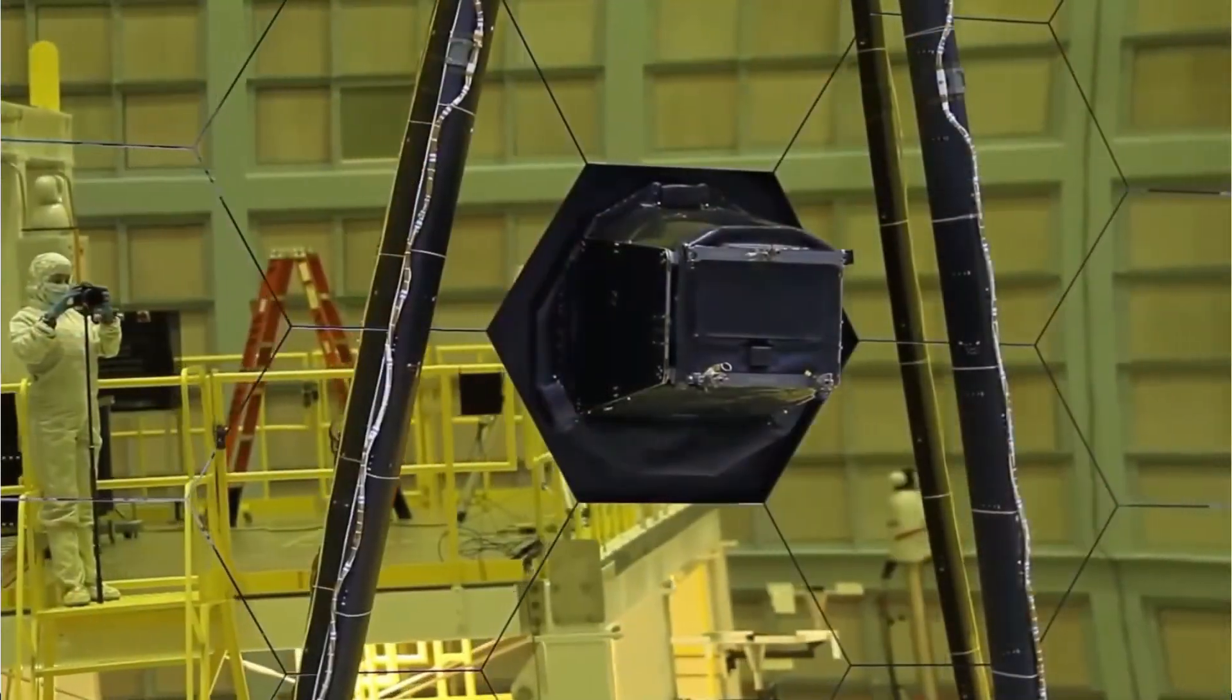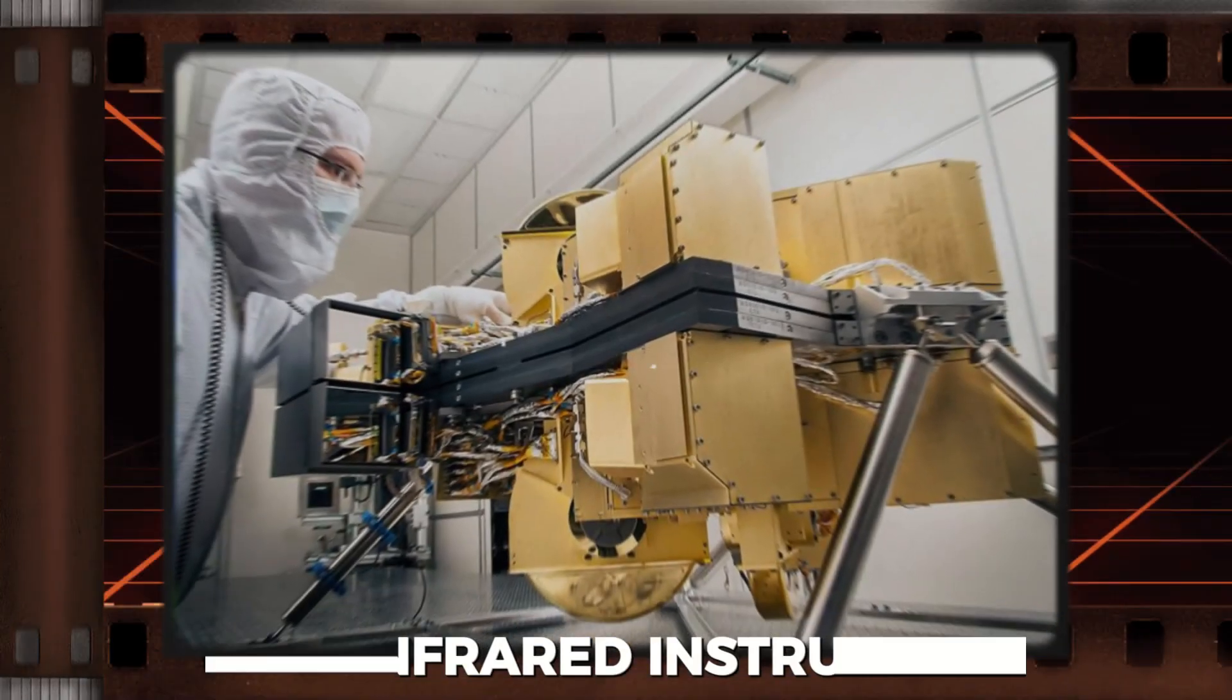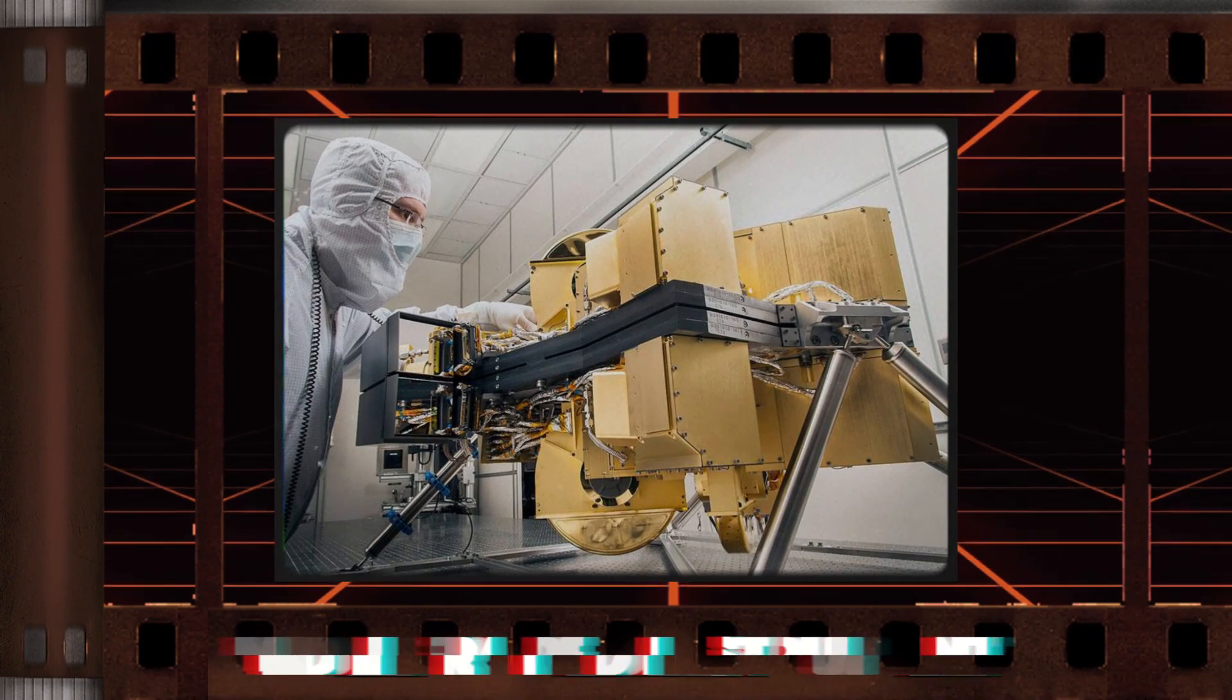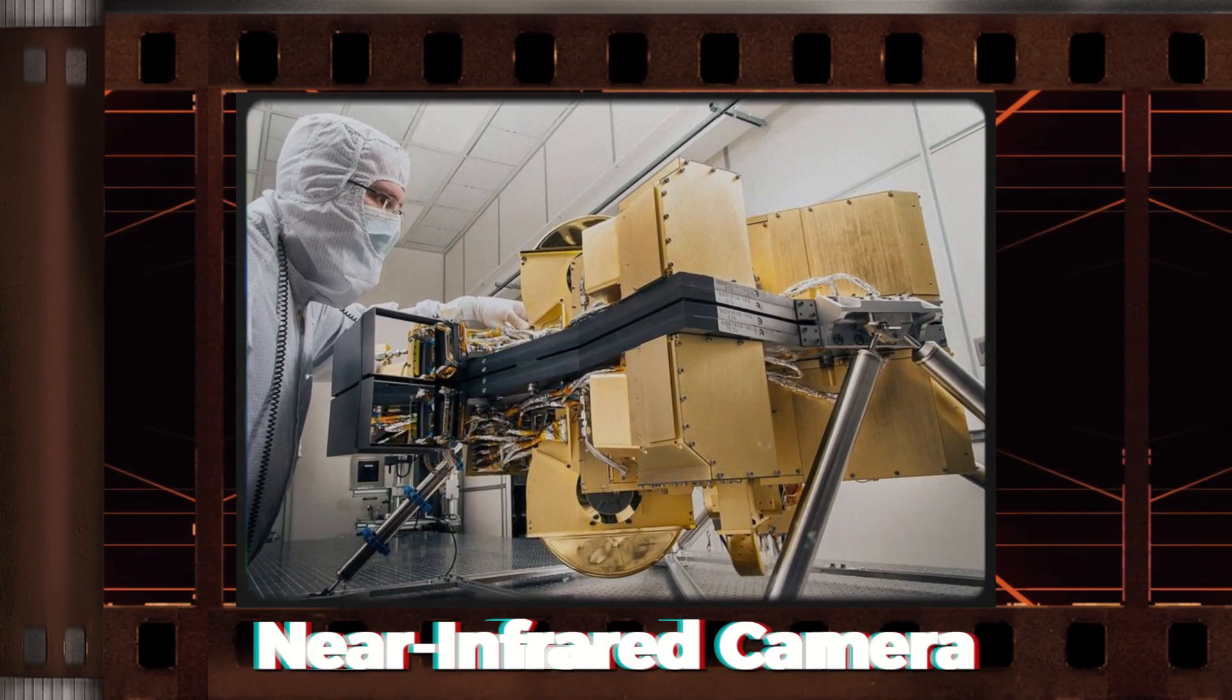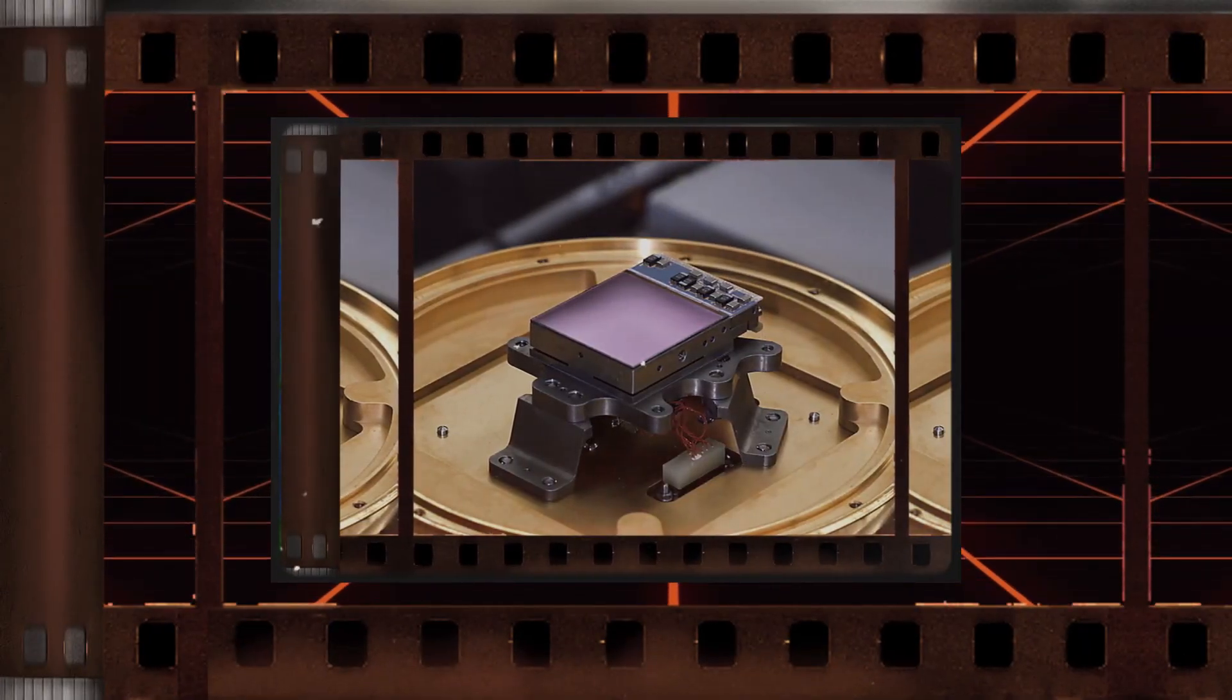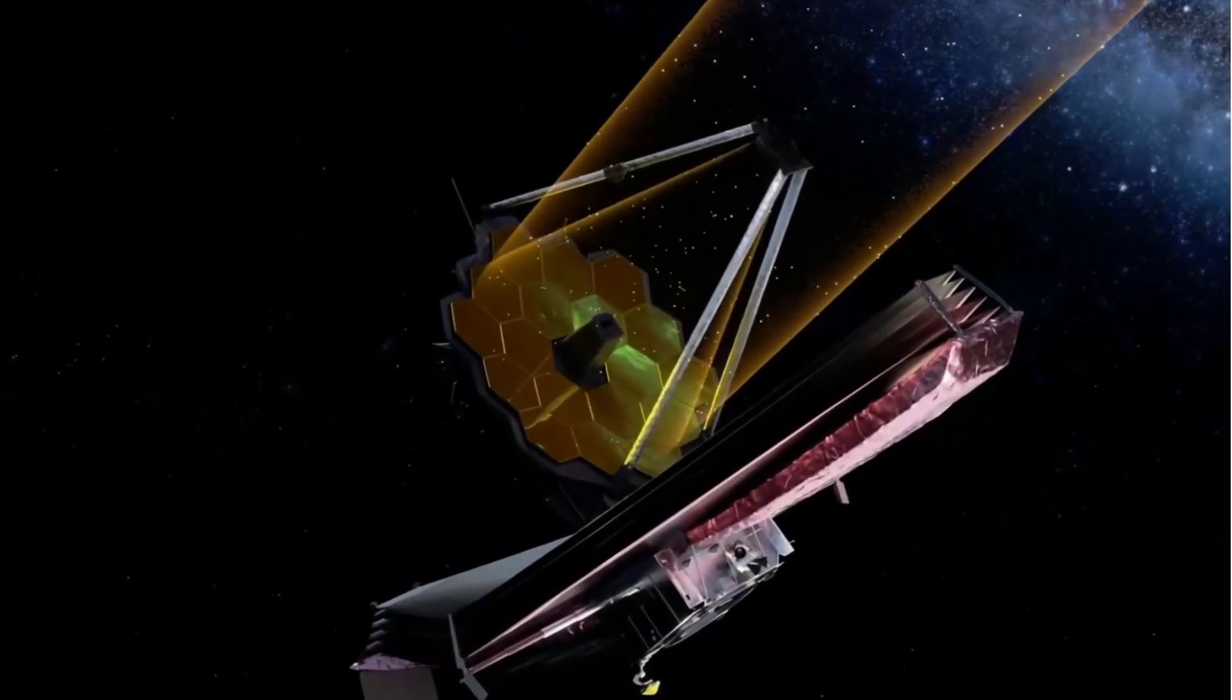The James Webb Space Telescope is a high-tech telescope with powerful tools, called instruments. These instruments have specific jobs to help scientists study the universe. One important tool is the Near Infrared Camera, the main camera of Webb. It takes amazing pictures of galaxies, nebulas, and other space wonders using near-infrared light, which is invisible to our eyes. The NearCam breaks down this light into different colors, helping scientists learn more about what they're looking at.